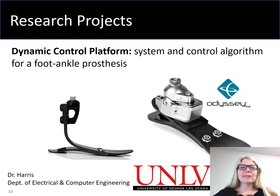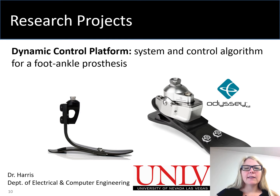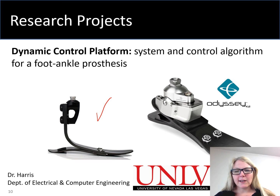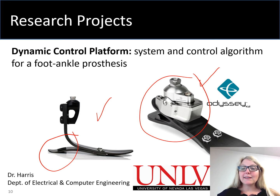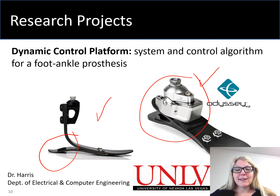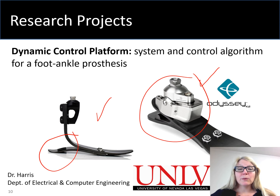Beyond industry, what about research? Here's an example project I'm working on: we're building a dynamic control platform — an active control system for a prosthetic ankle. On the left we can see a passive prosthetic device, basically a leaf spring like you've seen in the Olympics, where the spring effect propels the person forward. On the right is an active prosthetic with a motor and sensors actuating the movement. It's a very interesting application of embedded systems, it applies to robotics as well, and it can improve the lives of people who need these devices — making movement more comfortable and improving their quality of life.